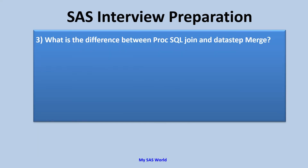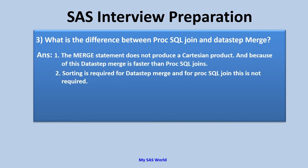The difference between PROC SQL join and data step merge: first, the MERGE statement does not produce a Cartesian product, so data step merge is faster than PROC SQL join. Second, sorting is required for data step merge but not for PROC SQL join. Third, for many-to-many joins — where both data sets have duplicate observations — data step merge gives undesired results because each observation is processed once. PROC SQL uses Cartesian product, so for many-to-many merges, PROC SQL is the ideal and more accurate choice.